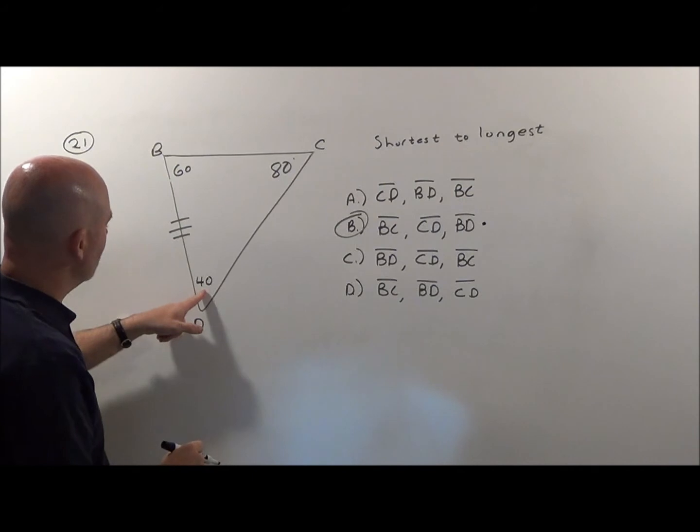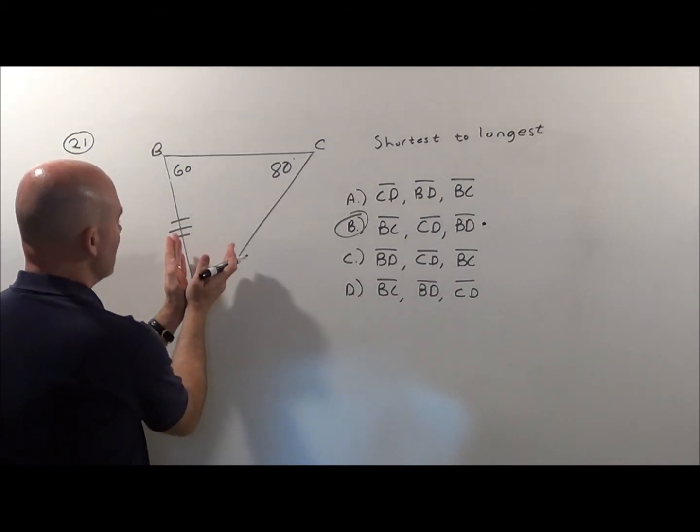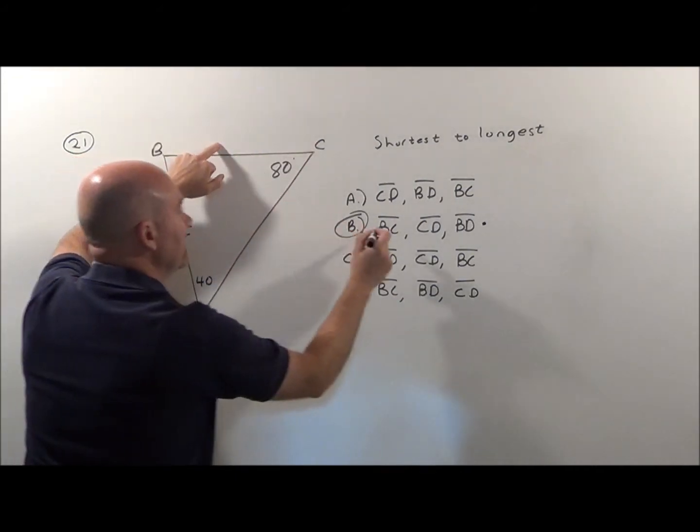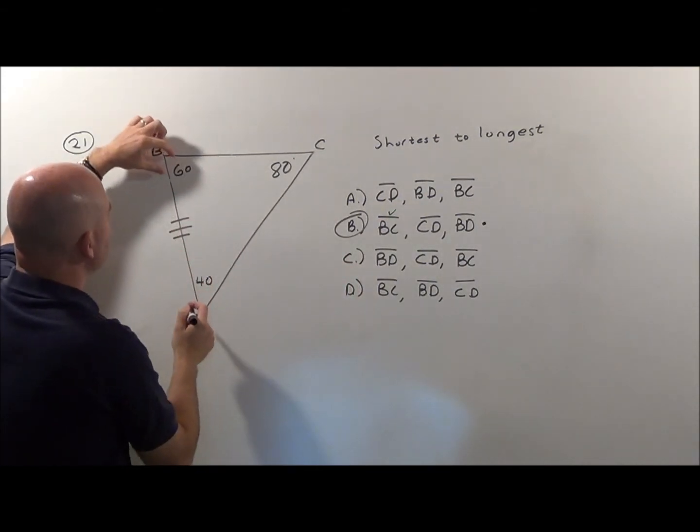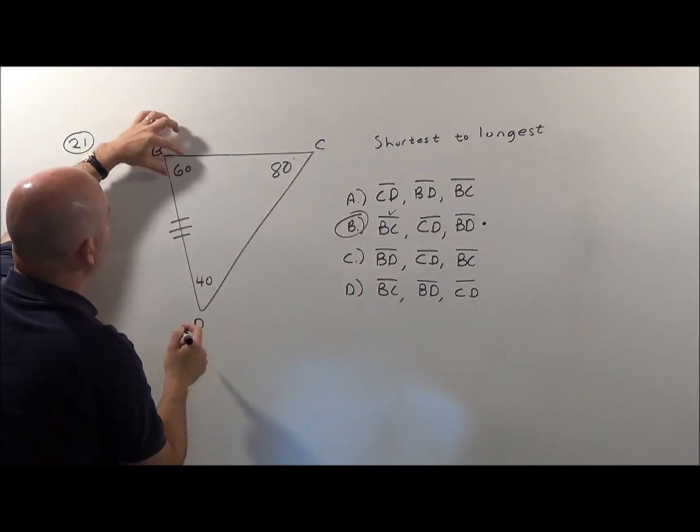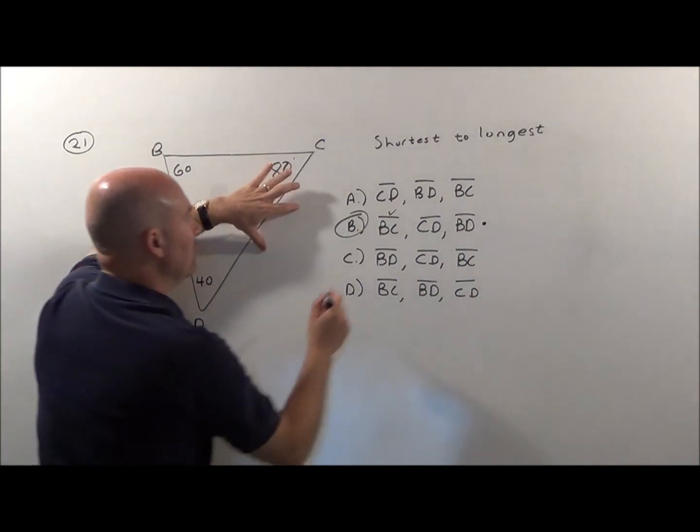Shortest, here's the shortest angle, the smallest angle, so the shortest side would be BC. Yep, right there, shortest. The middle, 60 is the middle degree angle we have, so the side across from it, CD would be in the middle.